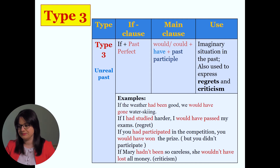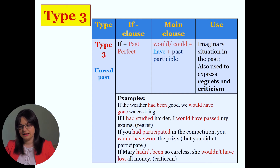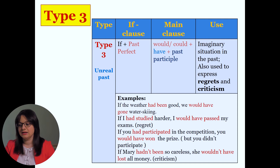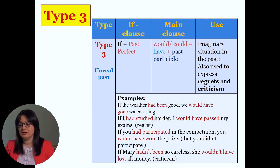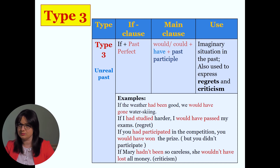Have a look at more examples. 'If the weather had been good, we would have gone water skiing.' Second: 'If I had studied harder, I would have passed my exams' — here we have regret. 'If you had participated in the competition, you would have won the prize' — but you didn't participate. 'If Mary hadn't been so careless, she wouldn't have lost all her money' — this expresses criticism.